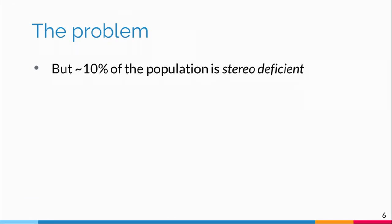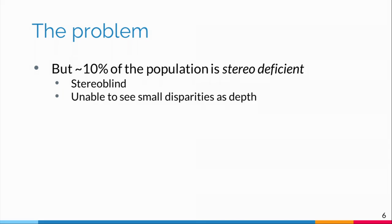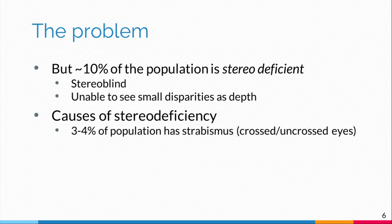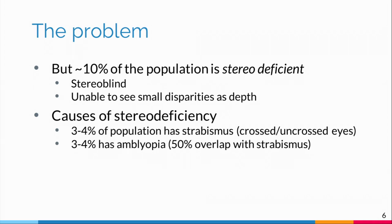About 10 percent of the population is stereo deficient — either stereo blind, seeing no stereo depth at all, or unable to see small disparities. The causes of stereo deficiency include: about three to four percent of the population has strabismus, where the eyes are either crossed or uncrossed; about three to four percent has amblyopia — many of whom also have strabismus. Amblyopia is a lazy eye, an inability to see clearly out of one eye — that's what kids wear an eye patch for, covering the good eye to make them use the weaker eye. Convergence insufficiency — if you don't cross your eyes enough, you won't be able to measure binocular disparities well because the images fall on non-corresponding parts of the two retinas.